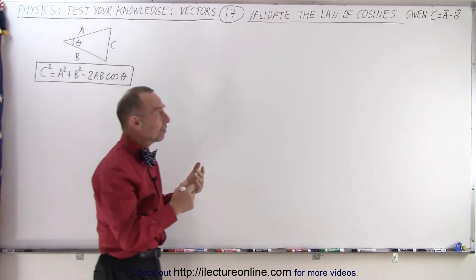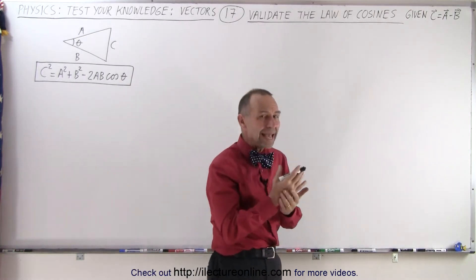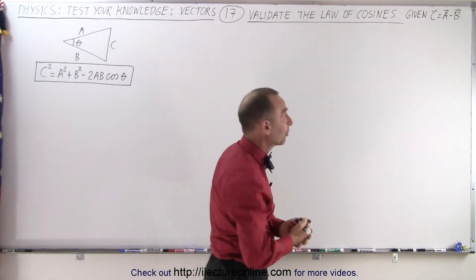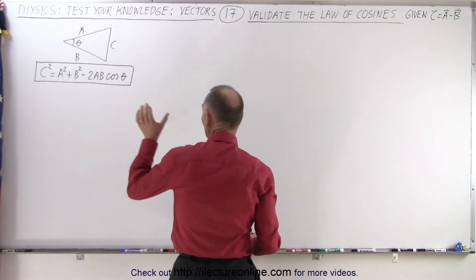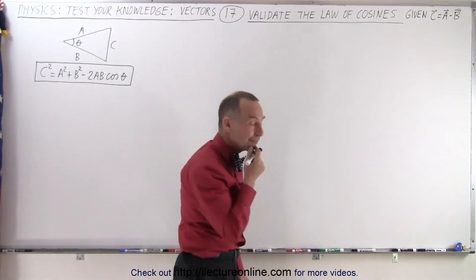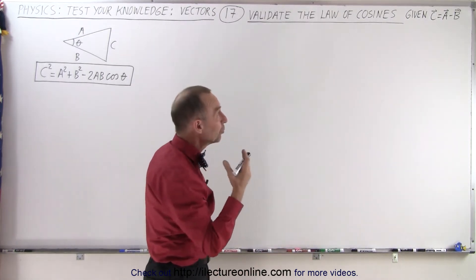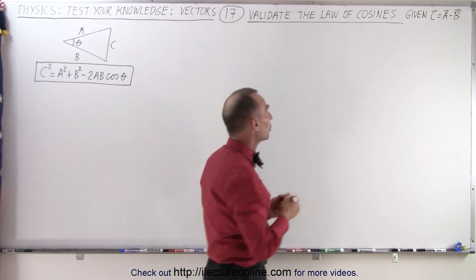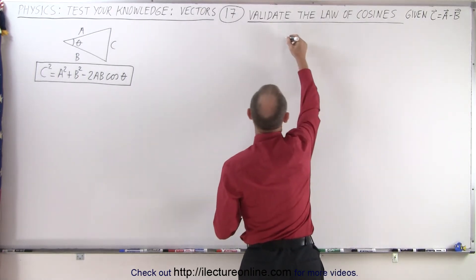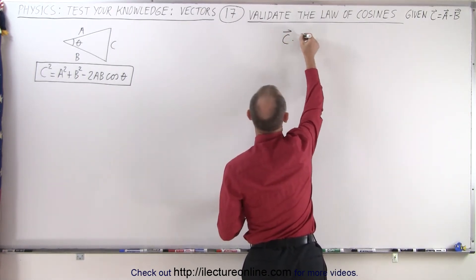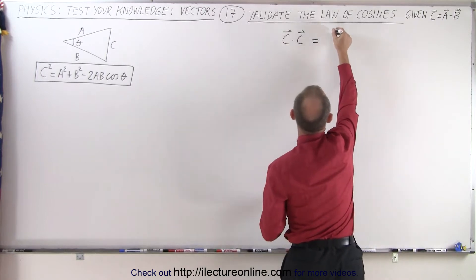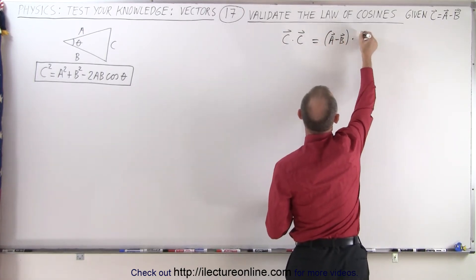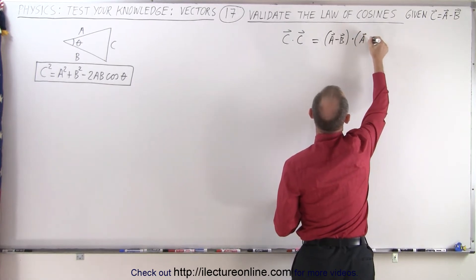We're given that the vector C is equal to the vector A minus the vector B. How can we use that piece of information to prove the law of cosines? It turns out we can do so by taking the dot product of both sides and setting them equal to each other. Our strategy is going to be to compute C dot C and show that that is equal to the quantity A minus B dotted with A minus B.